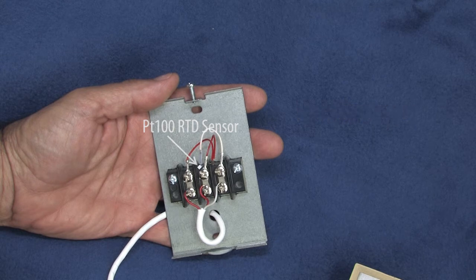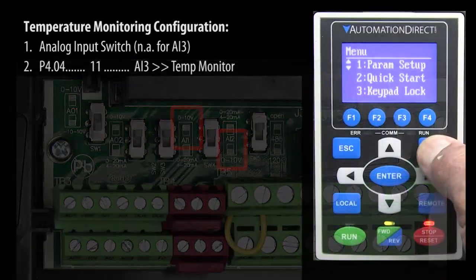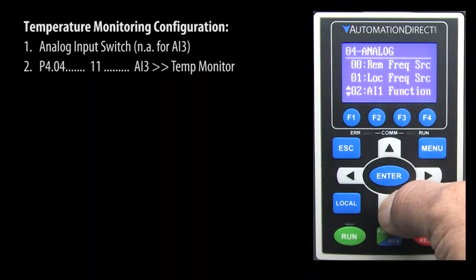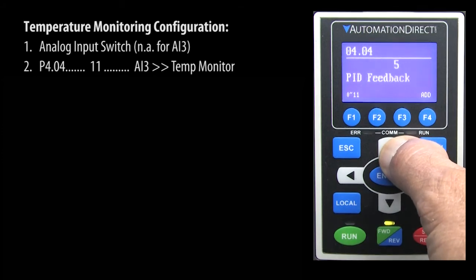Great, we're wired up so let's configure the drive. Analog input 3 only reads voltages so there's no switch to flip. If we were using analog input 1 or 2, we would need to make sure that the switch on the terminal board is set to the 0 to 10 volt position. In parameter 404, we tell the drive to use analog input 3 as the temperature monitor by selecting N11.